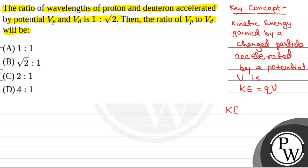Now, we know that kinetic energy is equal to P square by 2m, where P is the momentum and M is the mass of the particle. So, we will have P square by 2m is equal to QV, or P is equal to root under 2m QV. This will be the momentum.